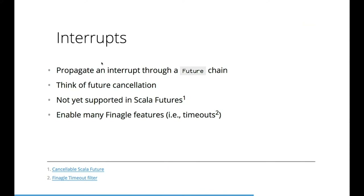The next really useful thing is interrupts - something that allows you to cancel your futures, basically cancel the chain of your transformations. Imagine you're designing an asynchronous API: you have some promise within your API, you return it back to the user as a future, and the user can signal you back that they're no longer interested in the result. You can use this information to cancel your calculation or do something like that. This is really useful.